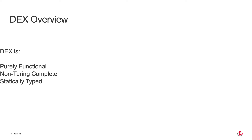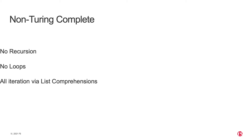DEX is a purely functional language and it's not Turing complete. As a configuration language, we really don't want our configurations to go into an infinite loop. This is enforced because there's no recursion in the language, no looping constructs. The only way you can iterate over something is via list comprehensions, and as long as your lists are finite, your programs do not diverge.